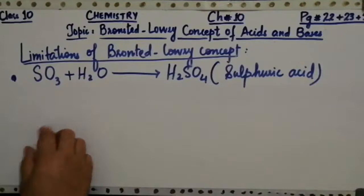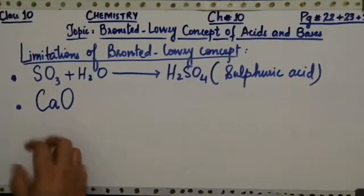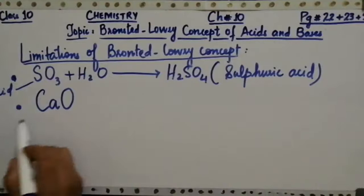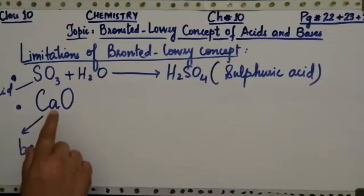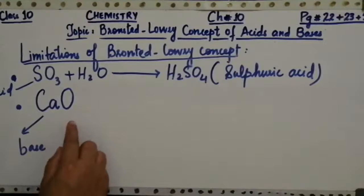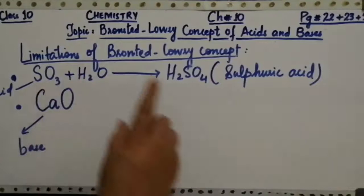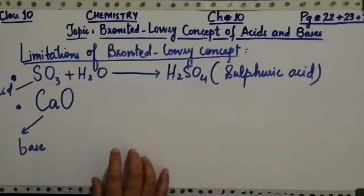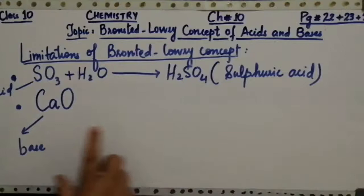Similarly, another example is calcium oxide, CaO. Scientists noted that if sulfur trioxide acts as an acid, then calcium oxide behaves like a base — but it cannot accept a proton from another substance. It does not have that ability. So how can we call calcium oxide a base if it does not accept any proton from any other substance? These observations proved the limitation of the Bronsted-Lowry concept, which therefore did not receive full acceptance.